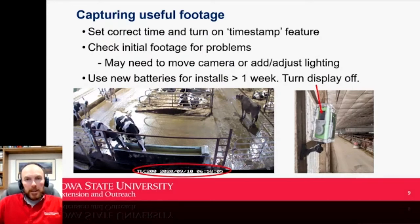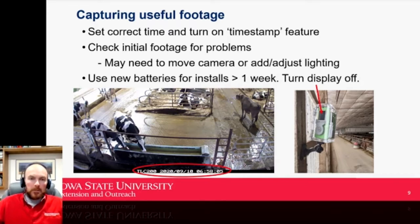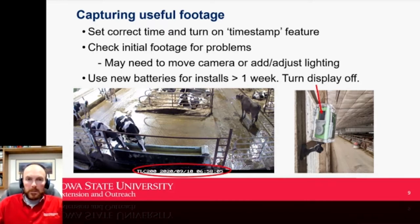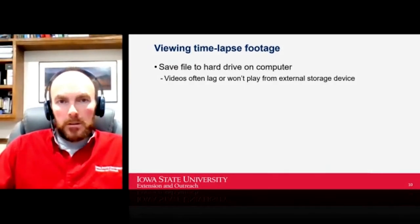An important feature is the time stamp — most cameras have an internal clock. As soon as you get one, set the correct date and time and turn on the timestamp feature. You'll find yourself watching videos wanting to know exactly when something happened, and without that feature you lose a lot of functionality. When you first install one, put it in for a day or two, then take it down and check your footage for any issues with lighting or camera angle.